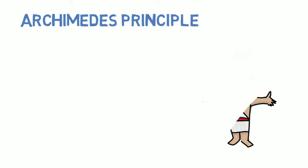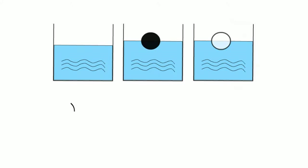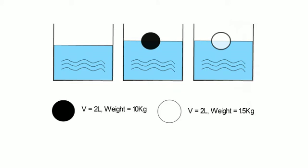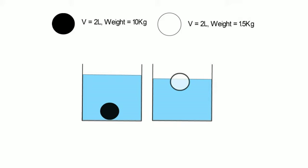I'm going to describe what Archimedes' Principle is. Let's start with an example. Let's say I have two containers full of water and I have two balls — one is an iron ball and the other is a crystal ball. I'm going to use the metric system. The volume of the two balls is the same: 2 liters. The weight of the iron ball is 10 kilos and the weight of the crystal ball is only 1.5 kilos. It's very intuitive that the iron ball will sink and the crystal ball will float — but why does this happen?